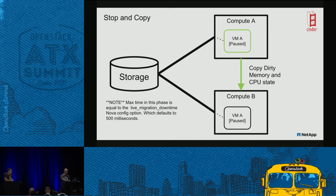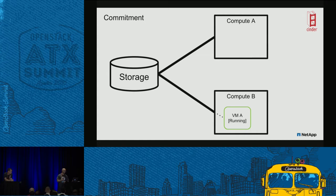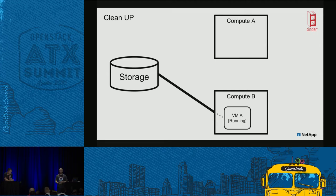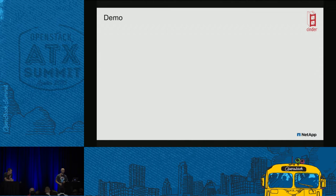Once the hypervisor confirms everything is copied to compute B, it starts the VM there and deletes it off compute A. But there may still be an iSCSI session to compute A, so Nova comes back in and cleans that up. Let's go over to the demo where I can actually show you this in action.